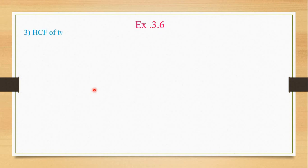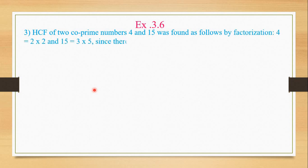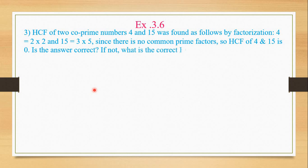Let's go to the next one: Exercise 3.6, question 3. Find the HCF of co-prime numbers 4 and 15. Here, HCF of 4 and 15 was found as follows by factorization. 4's factors are 2 × 2, and 15's are 3 × 5. Since there are no common factors, HCF of 4 and 15 is 0. They are saying that 4's factors are listed, 15's factors are listed, and there's nothing common, so the answer is 0.